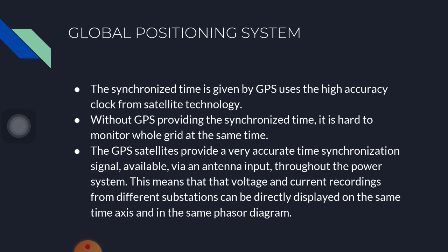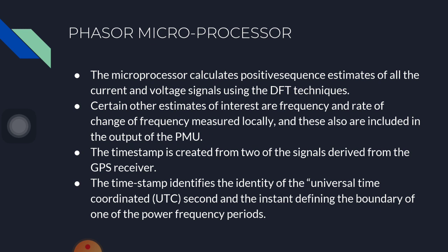Global Positioning System (GPS): the synchronized time is given by GPS, which uses high-accuracy clocks from satellite technology. Without GPS providing the synchronized time, it is not possible to monitor the whole grid at the same time. The GPS satellites provide a very accurate time synchronization signal available via an antenna input throughout the power system. This means that voltage and current recordings from different substations can be directly displayed on the same time axis and in the same phasor diagram.